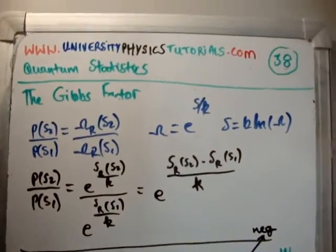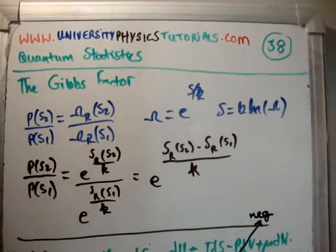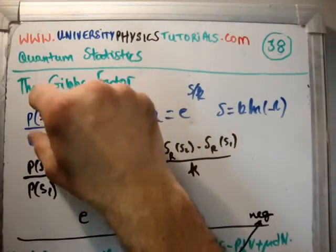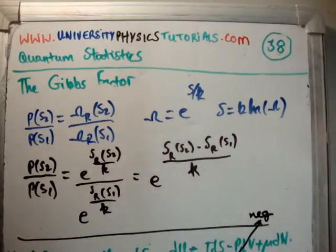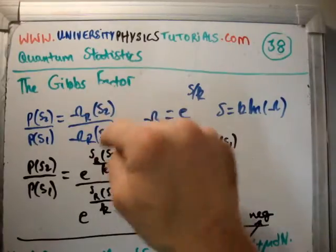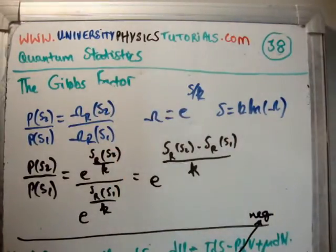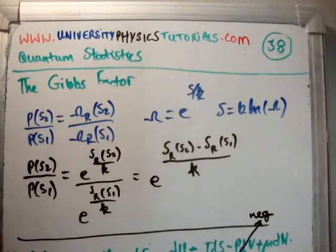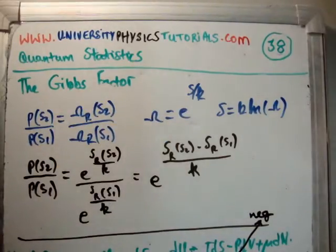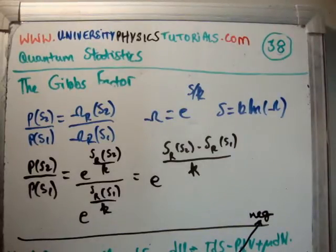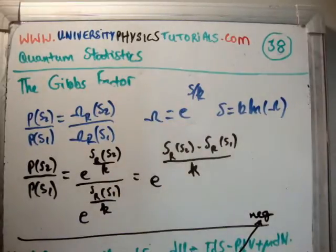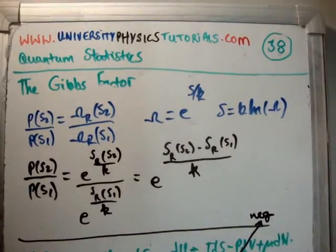Before I continue, there is something I want to say. Why is the probability of the atom being in state S2, divided by the probability of the atom being in state S1, proportional to these multiplicities? The reason is this: we know that the probability of the atom doing something is proportional to the number of states available in the reservoir. However, if we take the ratio of the probabilities, all the proportionality constants cancel, and we're just left with these two multiplicity factors.